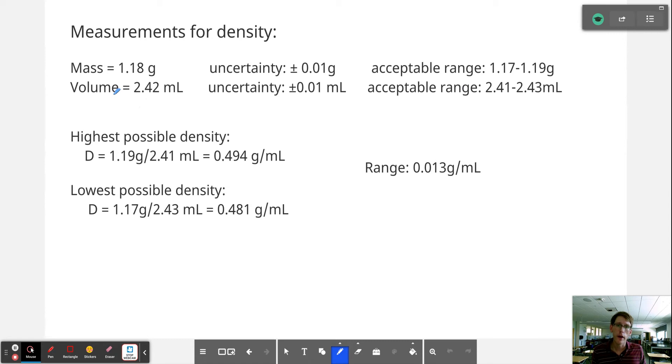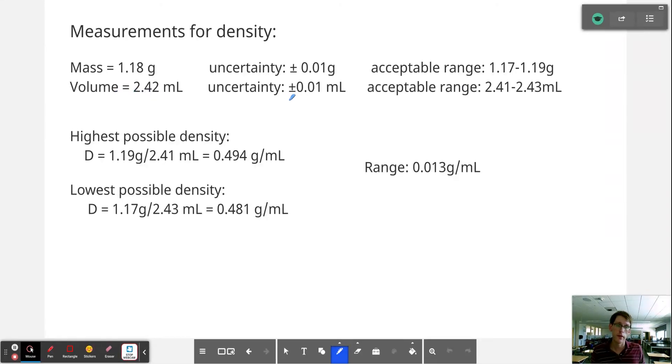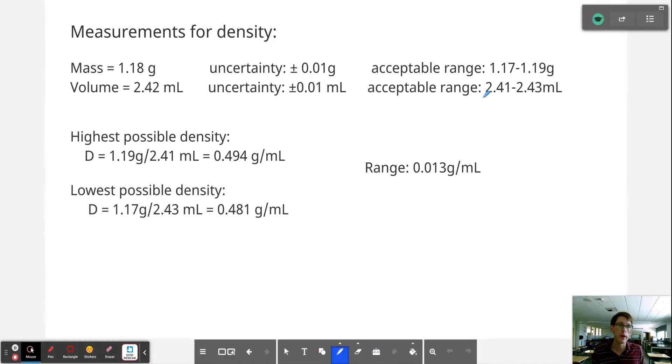Similarly, if we found that our volume is 2.42 milliliters, therefore our uncertainty is to the nearest plus or minus one hundredth, and we have an acceptable range of anywhere between 2.41 and 2.43 milliliters, which is very narrow, this uncertainty.